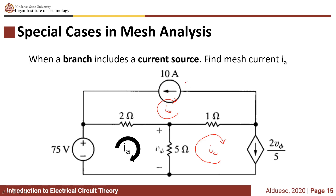If this is the case, IB is just equivalent to the current source of that branch. Since IB is in the clockwise direction and the 10A current is going in that direction, IB is just equivalent to negative 10A.